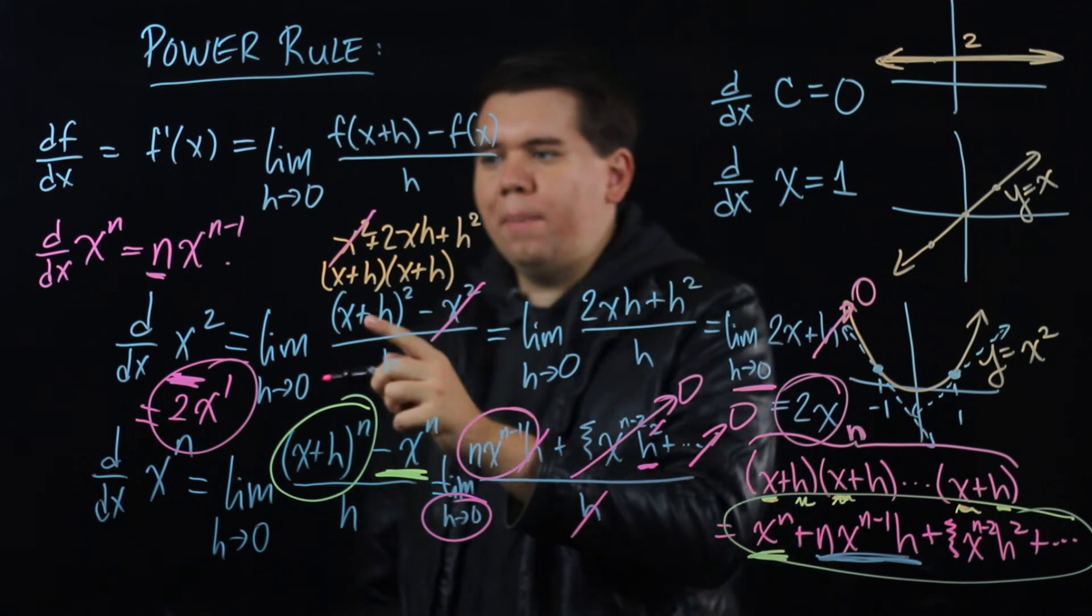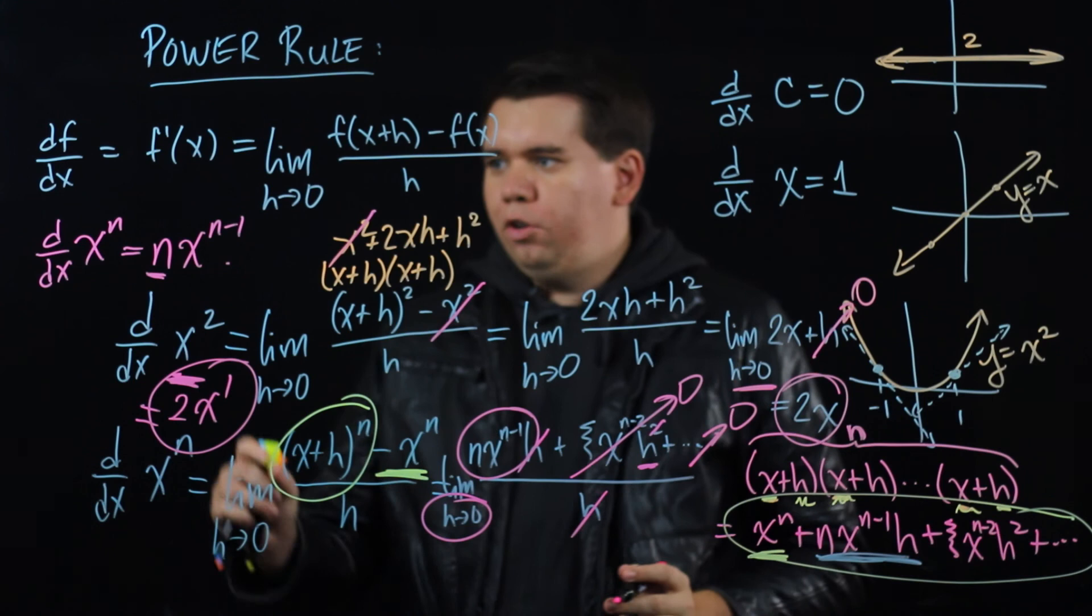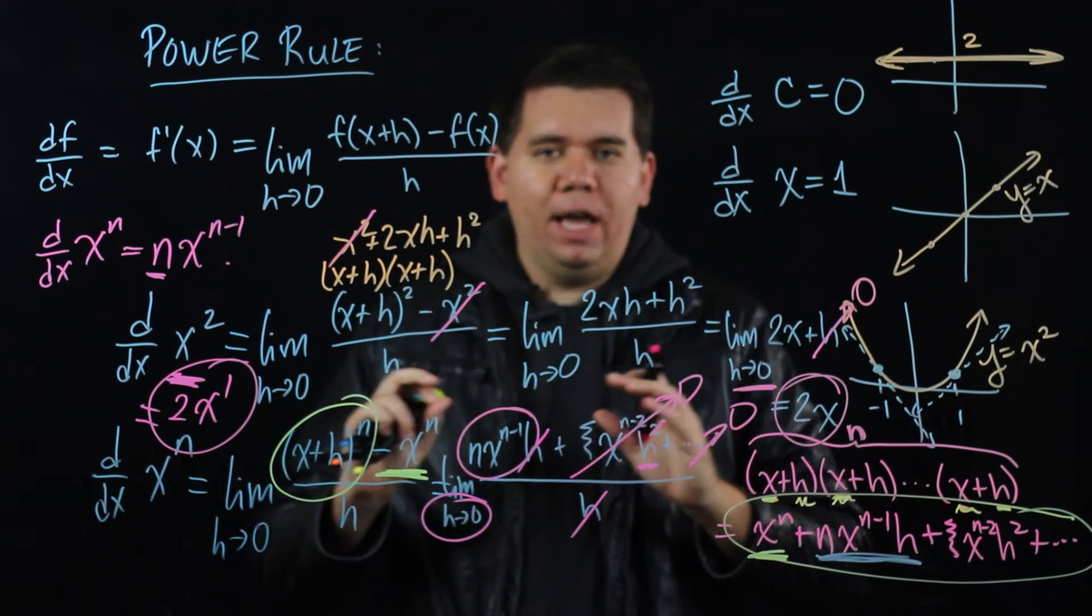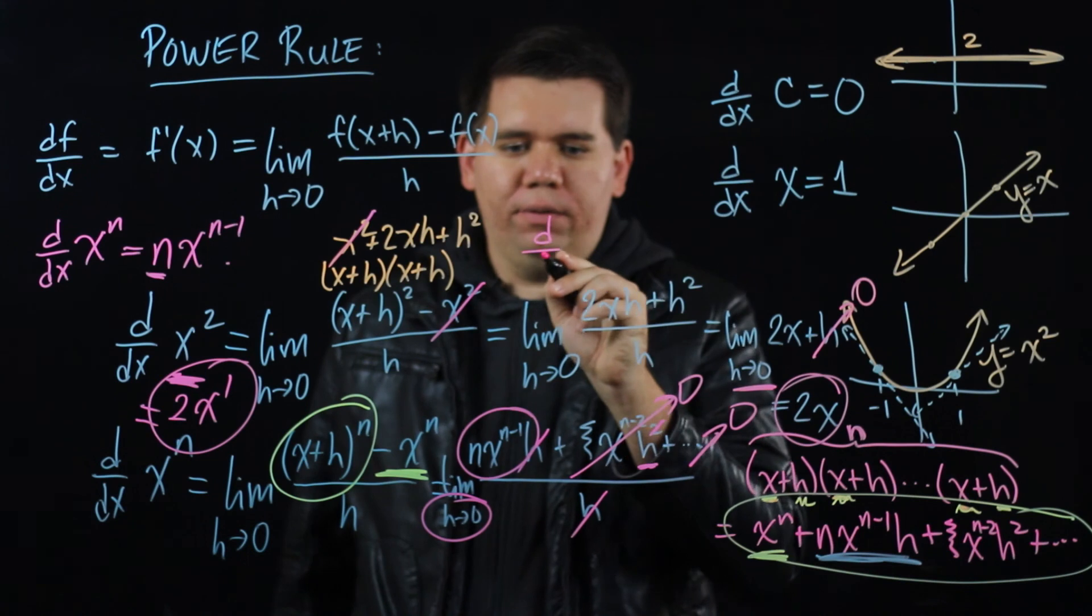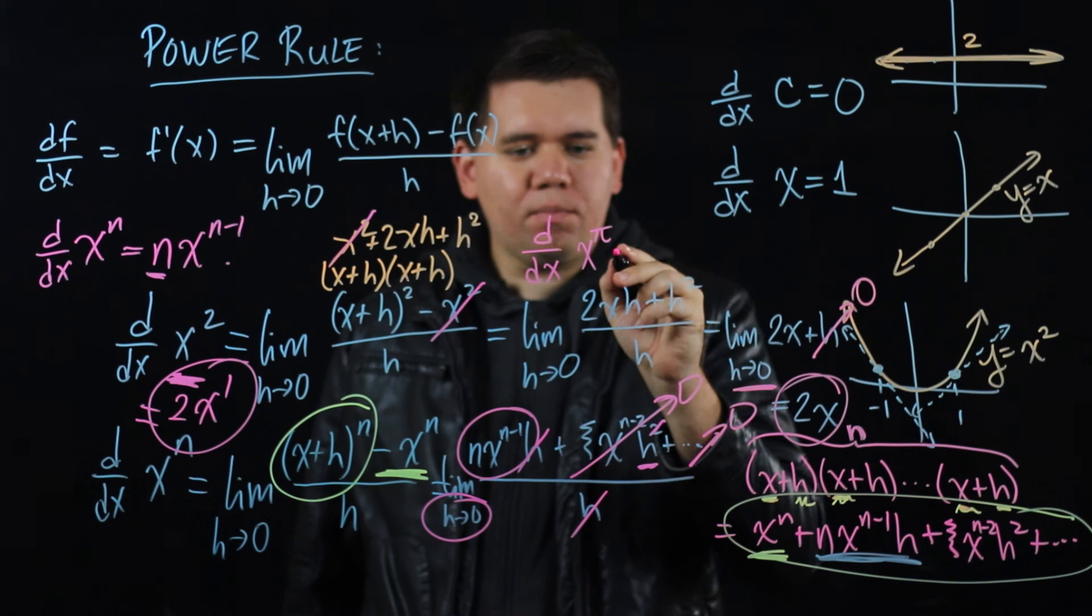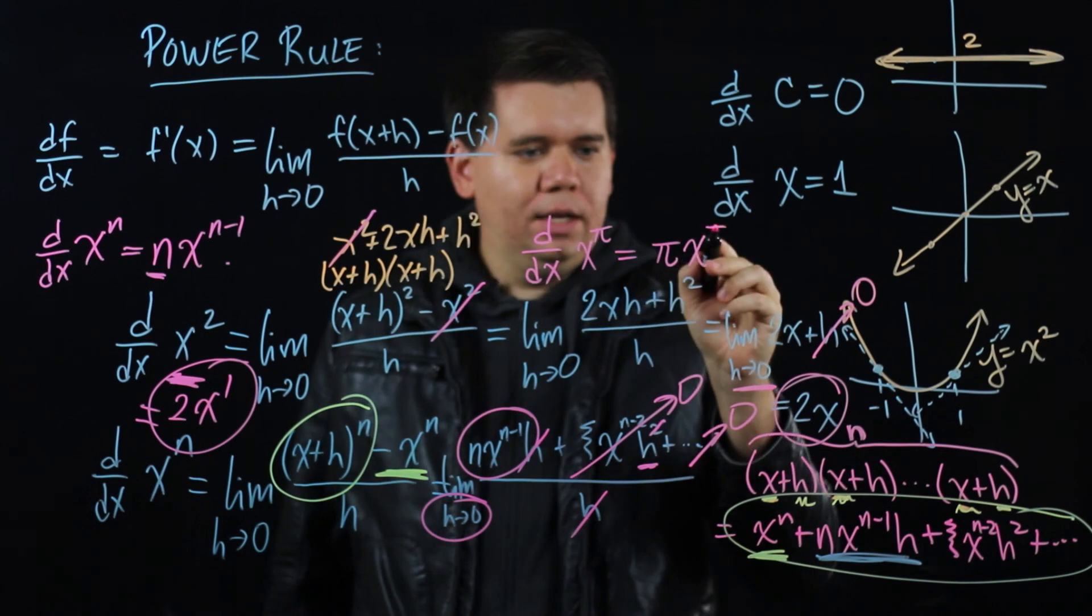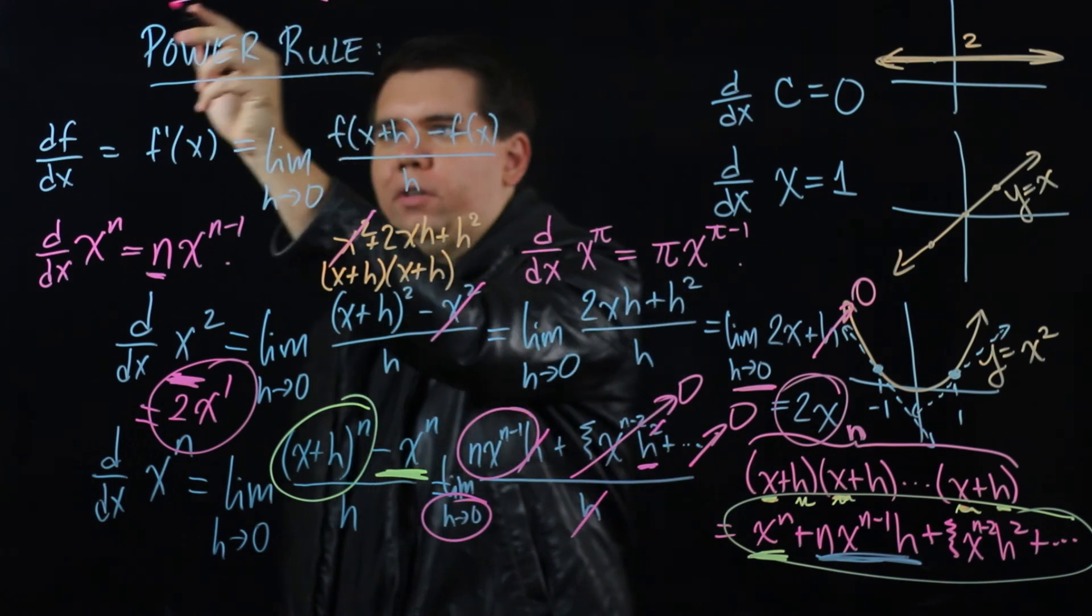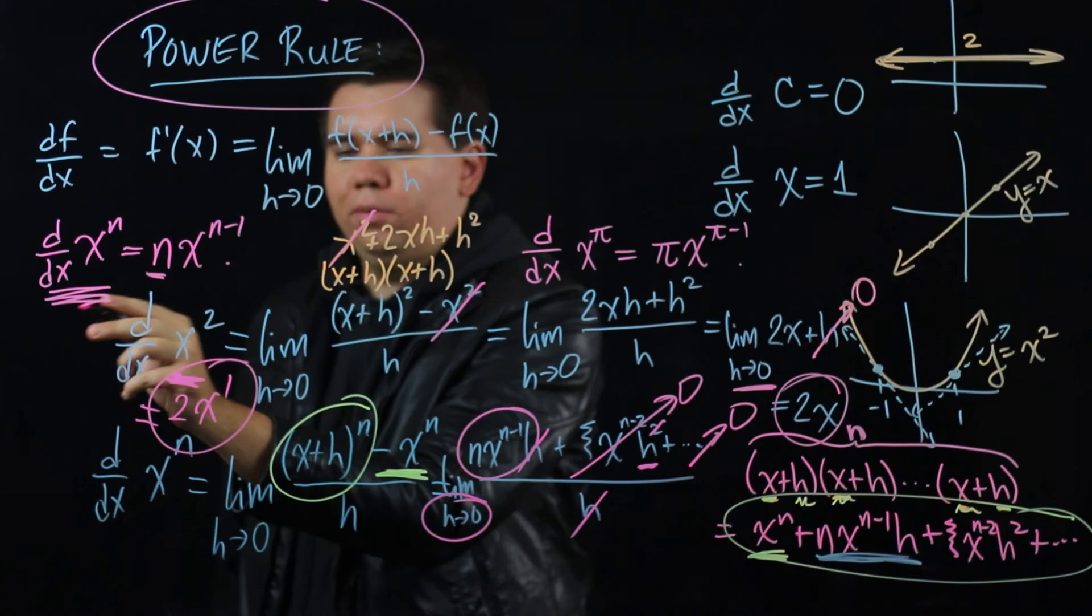Incredibly, this is a property that doesn't only work for whole numbers n but for any value n. You could do it for n equals 1 half or n equals 1 fifth or n equals pi or whatever you want, this property works. If you want to calculate what is the derivative of x to the pi, it would just bring the pi down and then subtract 1 from it, x to the pi minus 1 and so on. So this is the power rule. It gives us a shortcut whenever we want to calculate the derivative of x to some power.